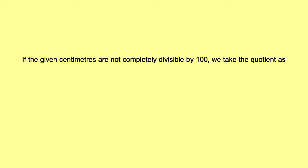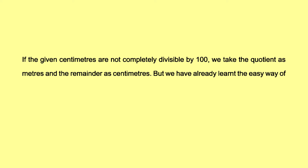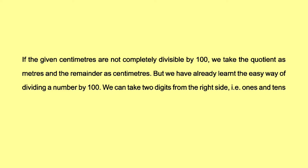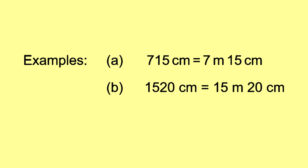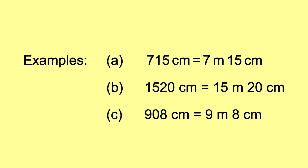If the given centimeters are not completely divisible by 100, we take the quotient as meters and the remainder as centimeters. The easy way is to take the last 2 digits (1s and 10s place) as the remainder and the rest of the digits as the quotient. Example: 715 centimeters is equal to 7 meters and 15 centimeters. 1,520 centimeters is equal to 15 meters and 20 centimeters. 908 centimeters is equal to 9 meters and 8 centimeters.